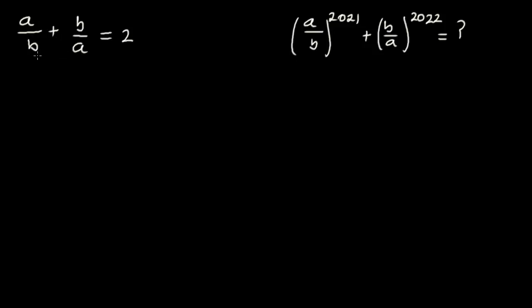So you are going to multiply it through by ab. When we do that, you're going to have ab times the first average, which is a over b, plus ab times the second average, which is b over a, is equal to 2 times ab.